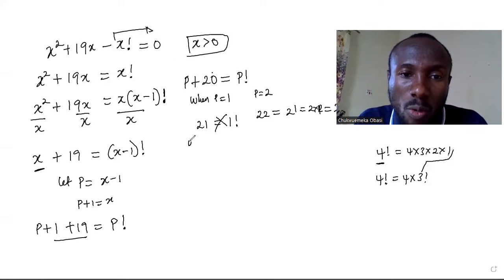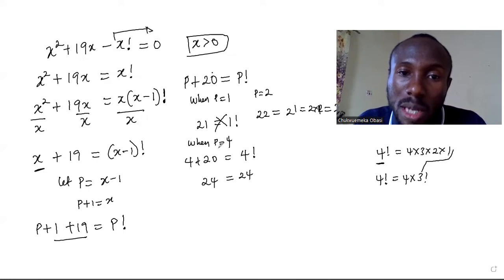So when p is 4, when p is equal to 4, we have 4 plus 20 is equal to 4 factorial, and 4 factorial is 24. And here we have 24. So that means p must be equal to 4.